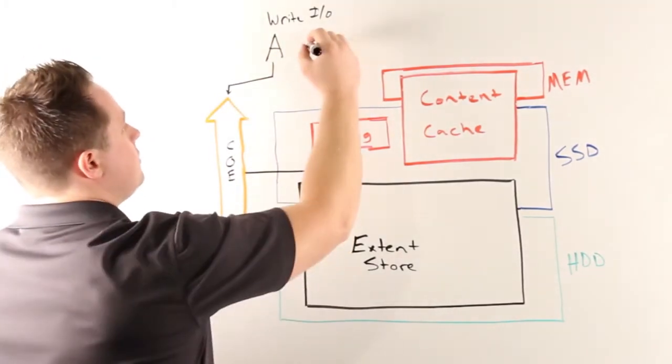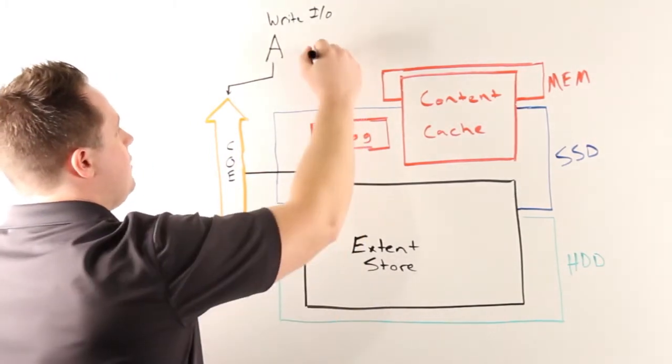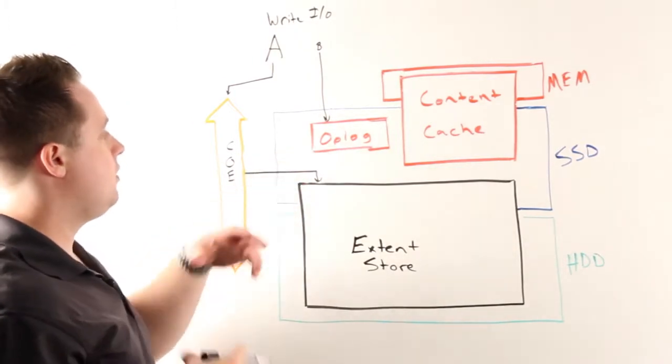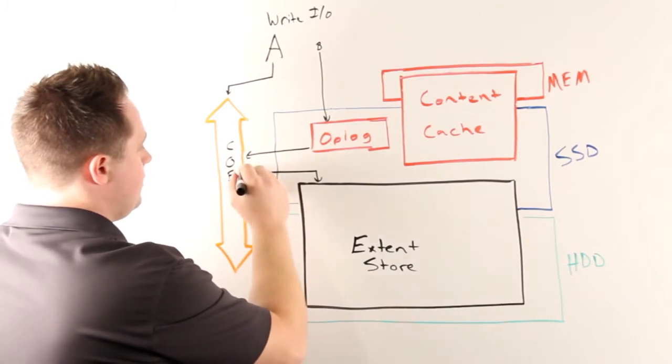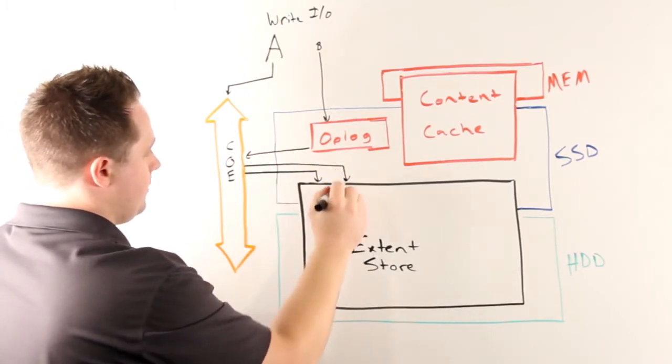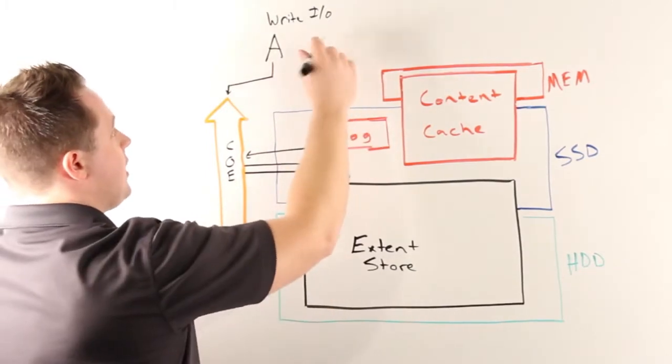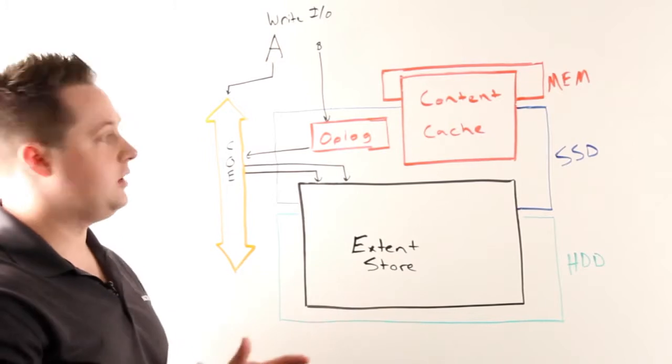For smaller I/Os or I/Os that are random in nature, these will be staged into our op log. This allows us to coalesce them, and then when they're drained from the op log, they become compressed before they're written to the extent store. This allows us to take smaller fragments, bundle them together, and compress a much larger fragment into a much smaller one.